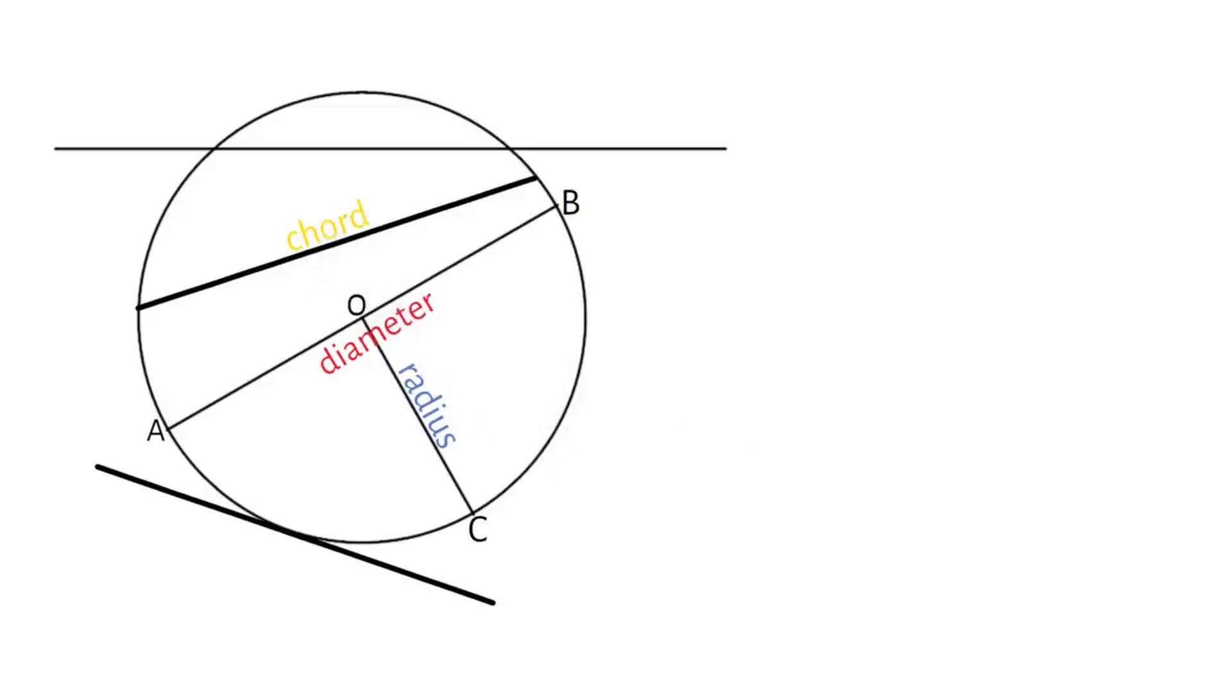If they draw a line that's outside the circle but touches it at one point, we call that line a tangent.